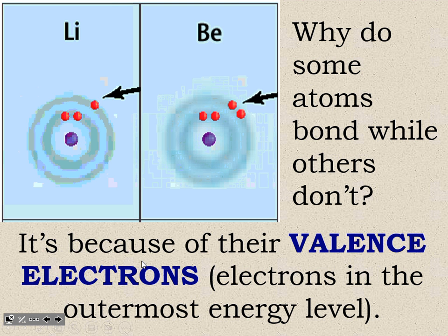So why do some of these atoms bond and the other ones don't? It is because of those very valence electrons, the outermost energy level. If we look at the diagram here, lithium on its outer level, right here where the arrow is, lithium's outer level has one valence electron. Right here, beryllium has two valence electrons. So those are electrons on the outermost energy level.